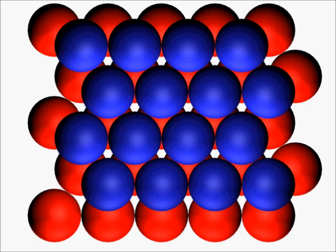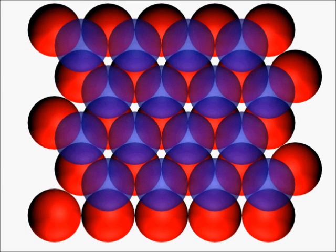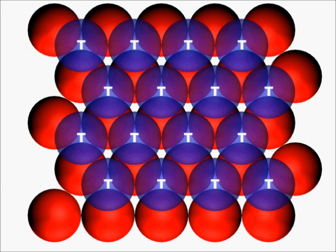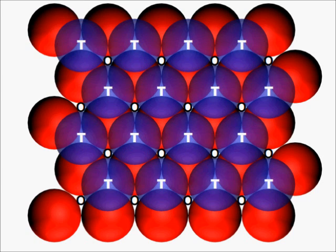We can no longer see all the void spaces created between the two layers. In order to overcome this problem we will make the second layer transparent. Now we can clearly see the two different types of voids created by these two layers. These are called tetrahedral voids marked by the letter T and these are called octahedral voids marked by the letter O.